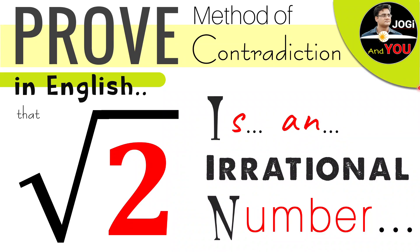I am Jogunder Singh and you are watching Jogi and You. Today we will prove that root 2 is an irrational number through the contradictory method.